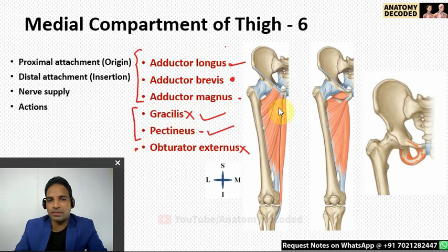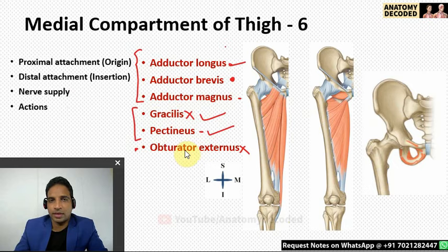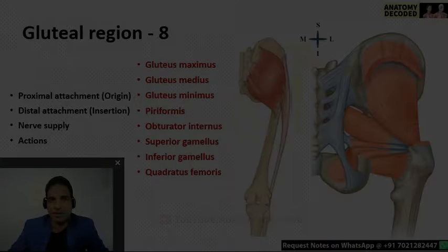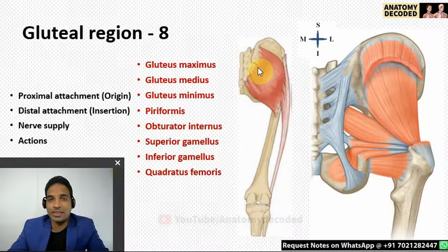The actions of the medial compartment muscles: all are adductors at the hip joint. Gracilis additionally causes flexion at the knee joint. Obturator externus also helps in lateral rotation at the hip joint.